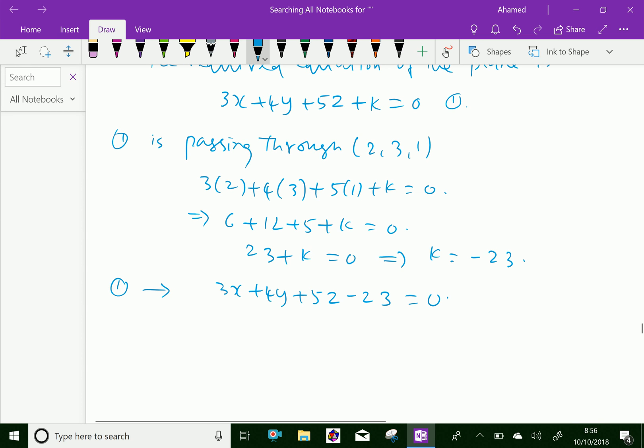Therefore, 3x plus 4y plus 5z minus 23 equals 0 is the required equation of the plane.